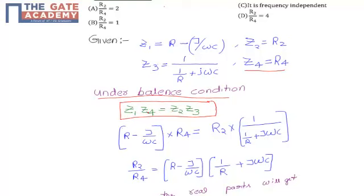We know the values of Z1, Z2, Z3, and Z4. Substitute the values here: Z1 is R minus j/(ωC) into Z4, which is R4, equals Z2, which is R2, times Z3, which is 1/(1/R + jωC).